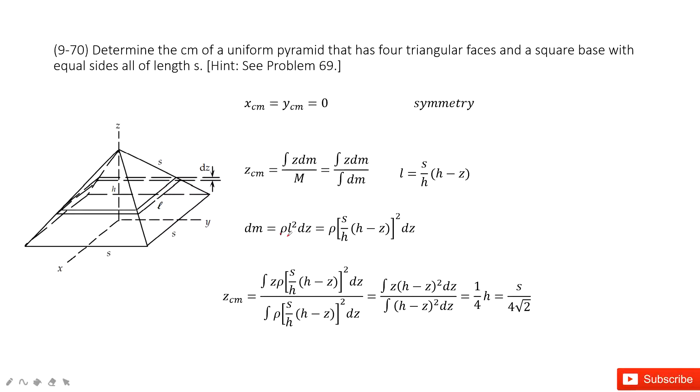We have two variables, L and z. How can we do that? We can find a relationship between them. You can see when z equals h, L is zero. When z equals zero, L is just s. Now we input this L inside.